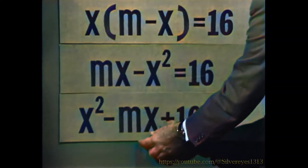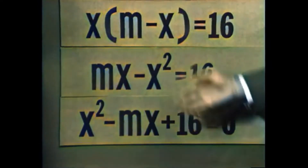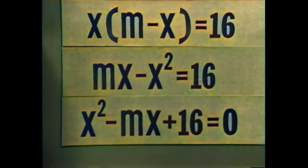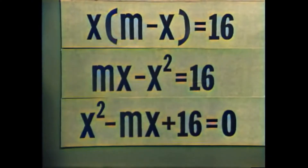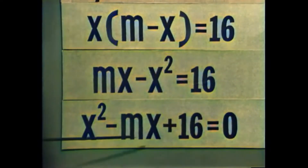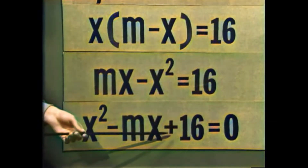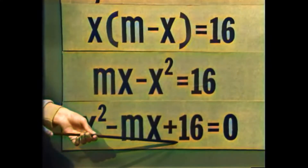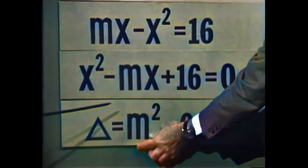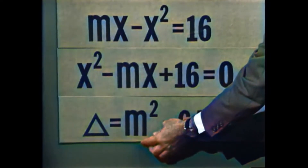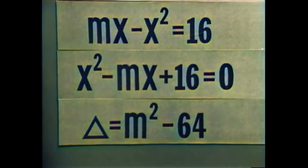שוב אנחנו שואלים: לאיזה ערכים של M יהיו שני פתרונות, פתרון אחד, או אין פתרון? צריך לבדוק את הדיסקרימיננטה. הדיסקרימיננטה היא: (מינוס M)² מינוס 4 כפול 16, שזה M בריבוע מינוס 64. נקבל דלטה שווה ל-M בריבוע מינוס 64.